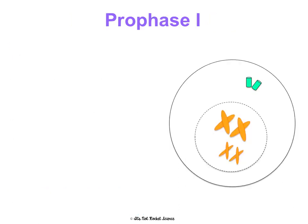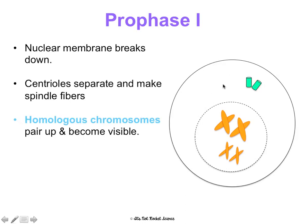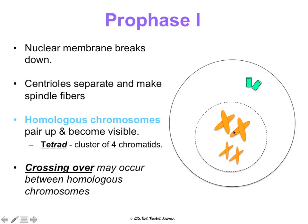In prophase I, the nuclear membrane breaks down, the centrioles start separating, and we start making spindle fibers. Homologous chromosomes will pair up — notice the similar chromosomes go next to each other. They're going to form a tetrad, a cluster of chromatids. And crossing over can occur between those homologous chromosomes — which is new; this didn't happen in prophase of mitosis.